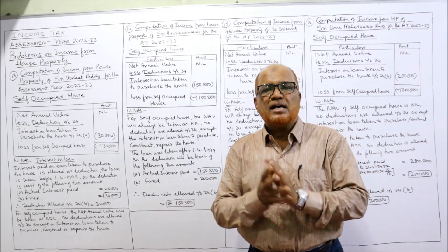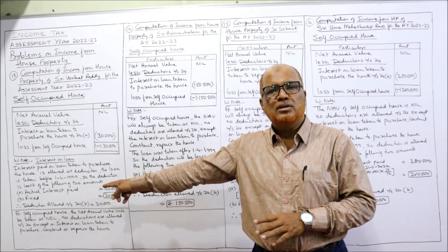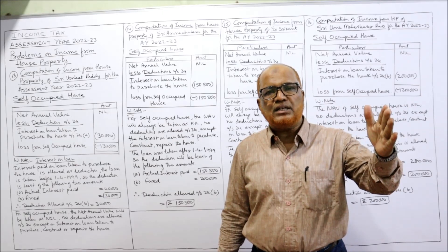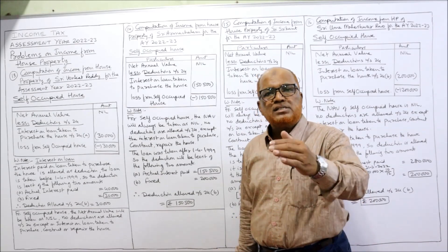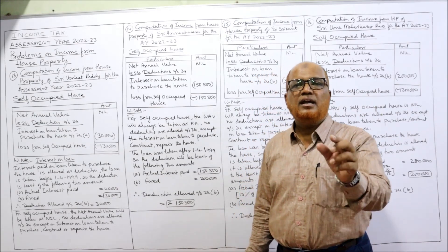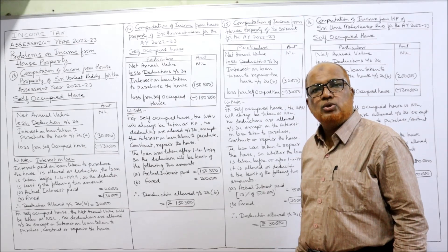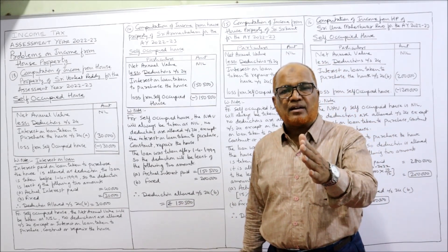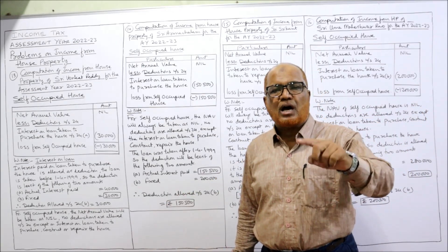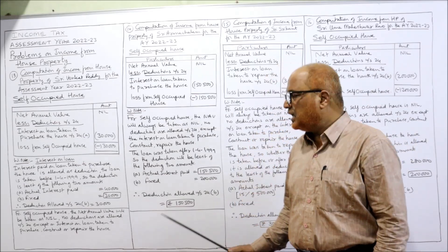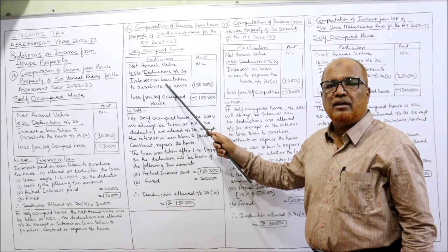This assessee has taken a loan from a bank to purchase the house. As I told you: if the loan is taken before 1-4-1999, the ceiling limit is ₹30,000. If the loan is taken after 1-4-1999, then the ceiling limit is ₹2 lakh. The date is the deciding factor. Before 1-4-1999 — ceiling ₹30,000. After 1-4-1999 — ceiling ₹2 lakh. Here, NAV = nil. Deduction under Section 24B: interest on loan taken to purchase the house.